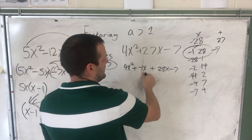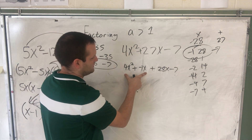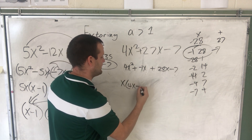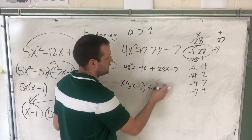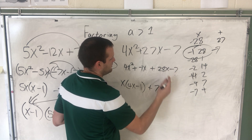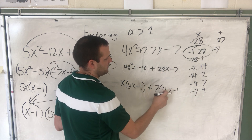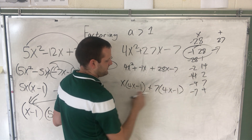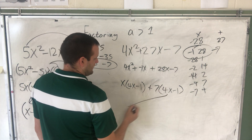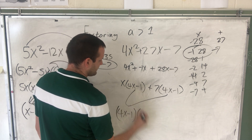Negative 1x plus 28x is still 27x, so it's the same equation just split up. From the first group, I can factor out x, giving x(4x minus 1). From the second group, I can factor out 7, giving 7(4x minus 1). Both binomials are the same — 4x minus 1. So I factor that out: the final answer is (4x minus 1)(x plus 7).